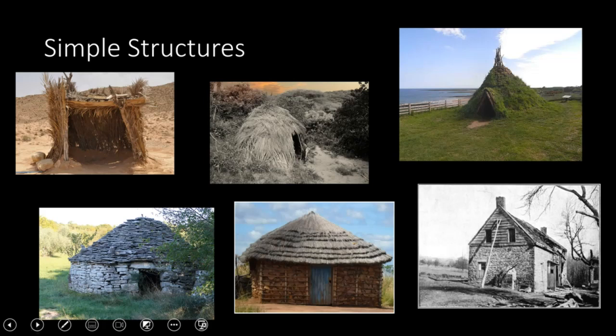So the first thing we went over were these different kinds of simple structures. And in retrospect, we can now sort of see some of the forms that came to dominate architecture later in some of these simpler structures. So a lot of grass, wood, simple stone in these ones.